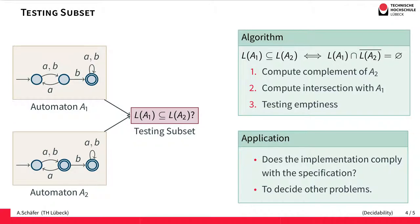The key to this decision procedure is the property that L(A1) is a subset of L(A2) if and only if there's no word that is accepted by A1 but not accepted by A2.